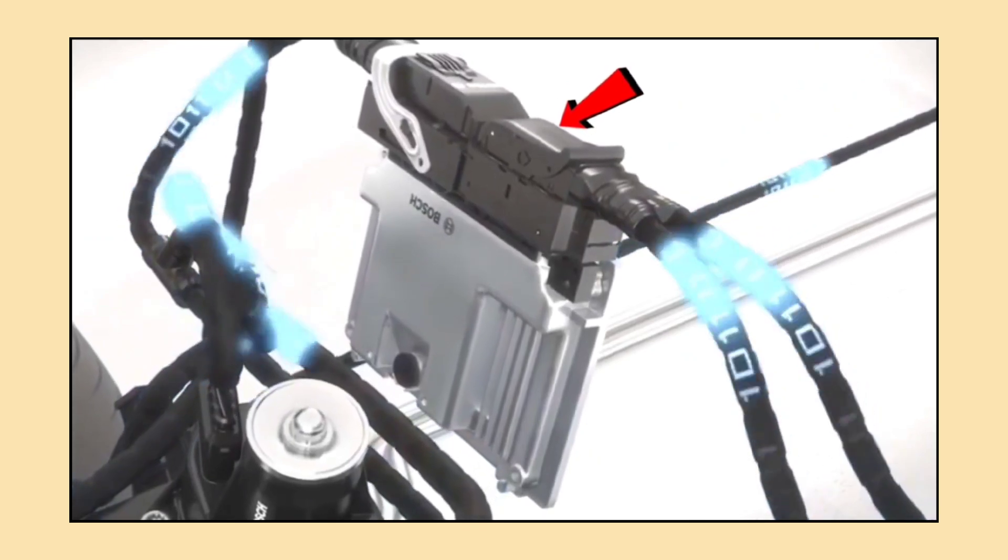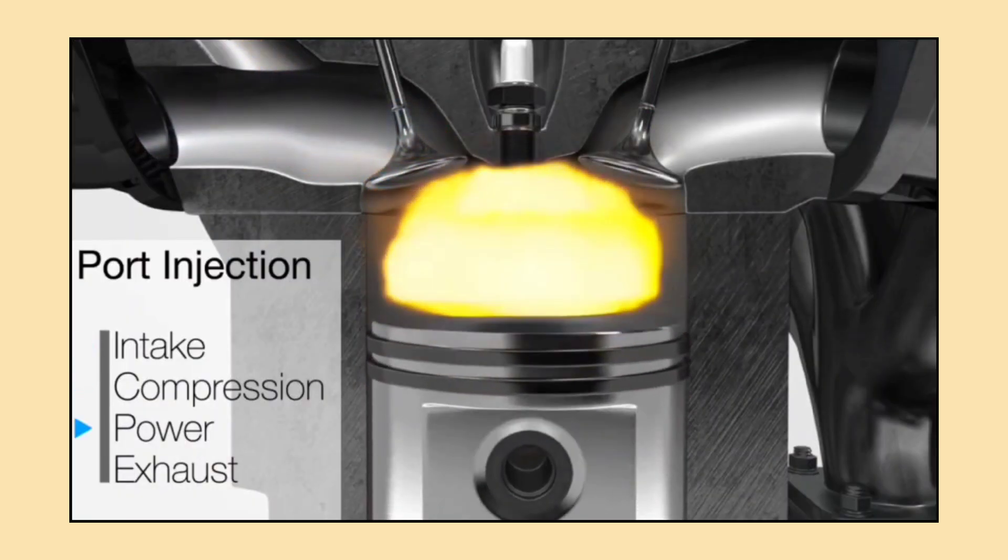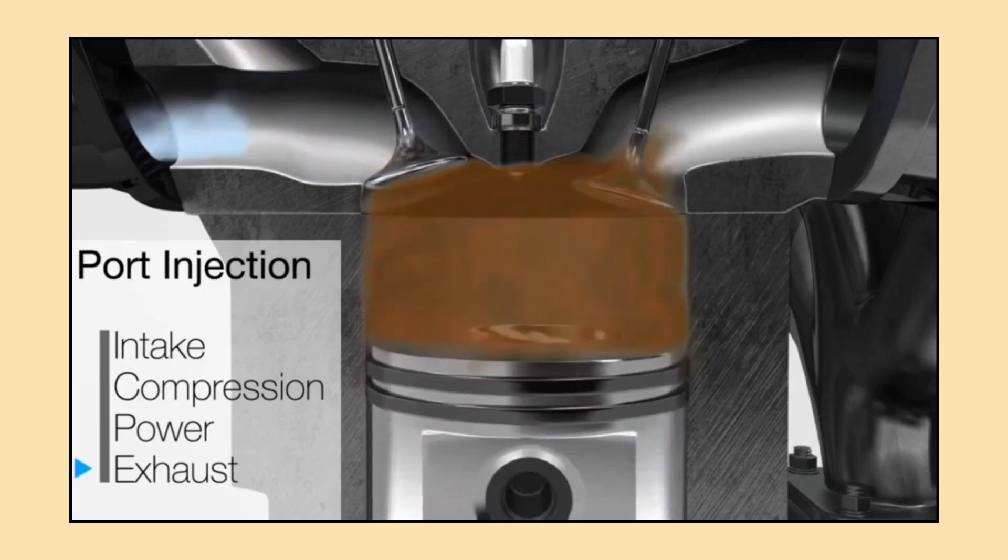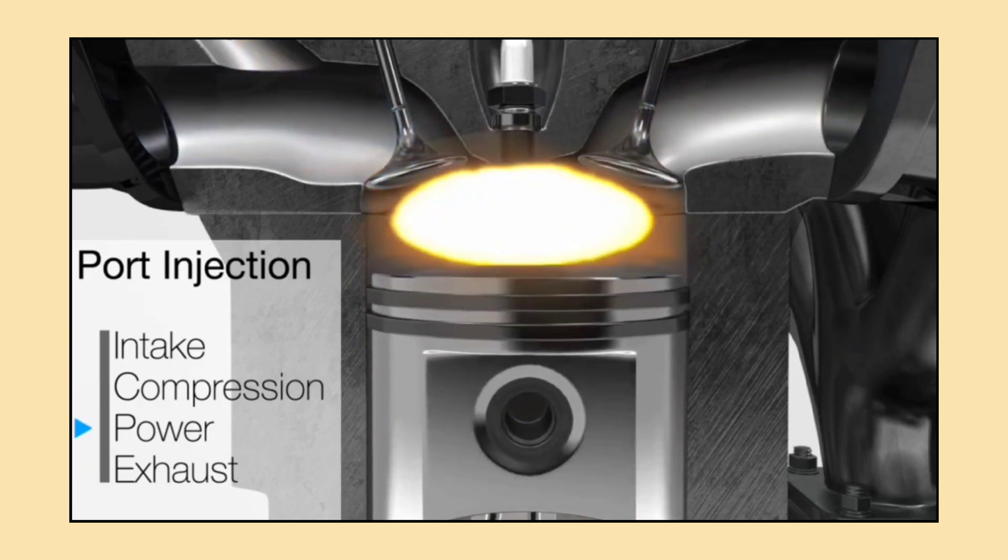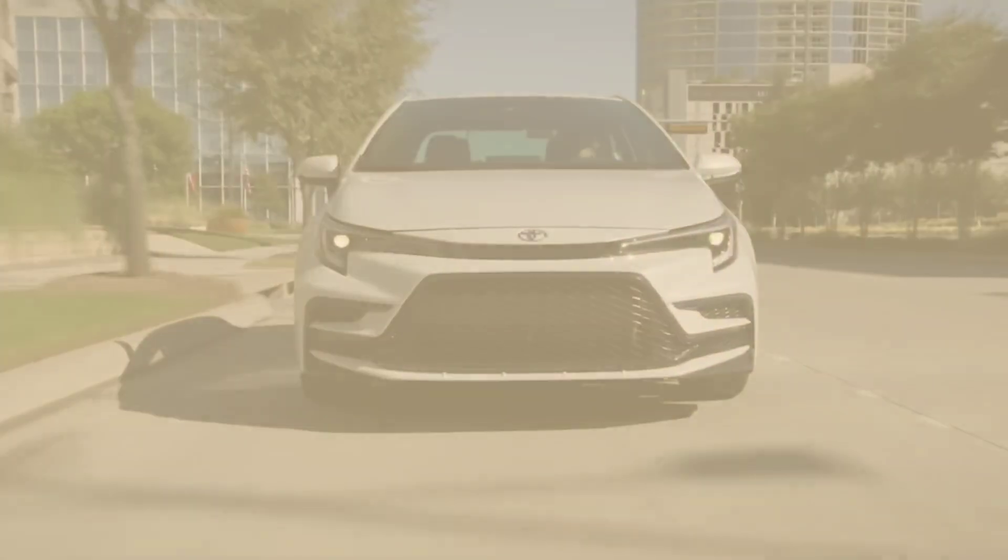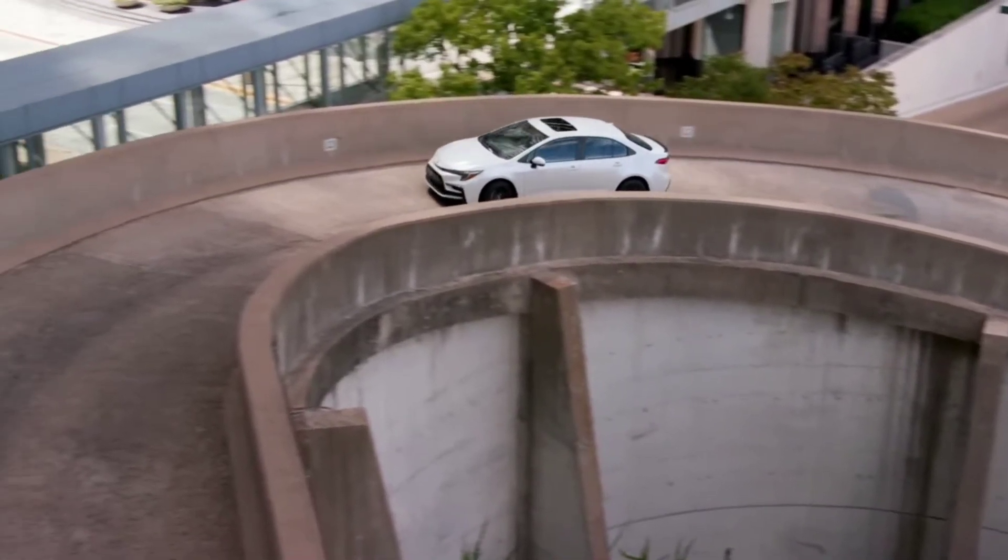The injectors spray fuel directly into the combustion chamber or intake manifold depending on the type of system. The ECU constantly makes adjustments to ensure that the engine gets the perfect mix of air and fuel. Depending on the driving conditions, this precision is what helps modern cars run so efficiently.